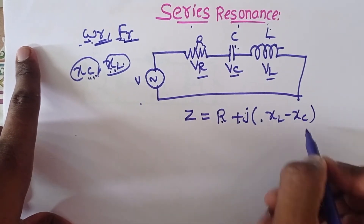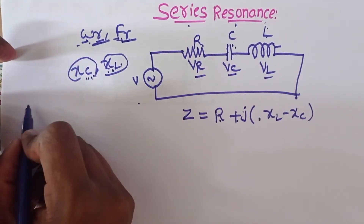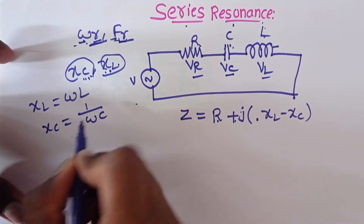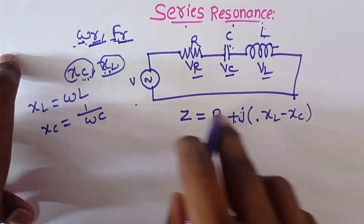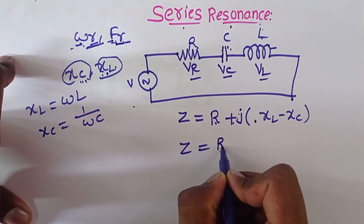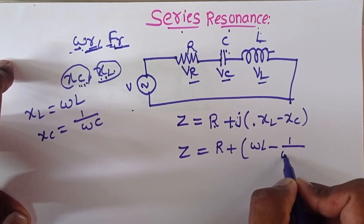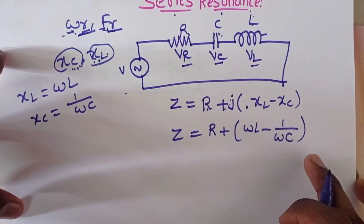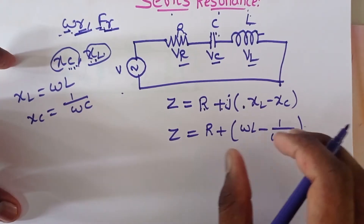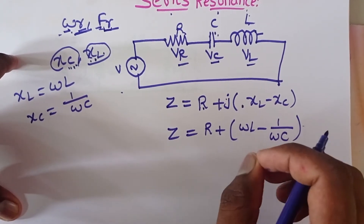So Z equals R plus j times (XL minus XC). Now XL equals Omega·L and XC equals 1/(Omega·C). Substituting these, Z equals R plus j times (Omega·L minus 1/(Omega·C)). According to resonance, the total reactance equals zero, because the reactance of the inductor equals the reactance of the capacitor at resonance.